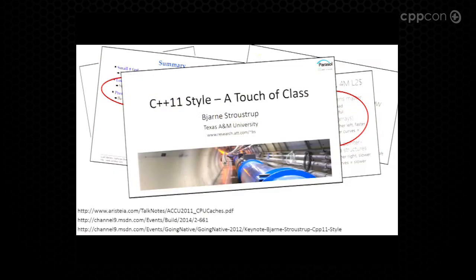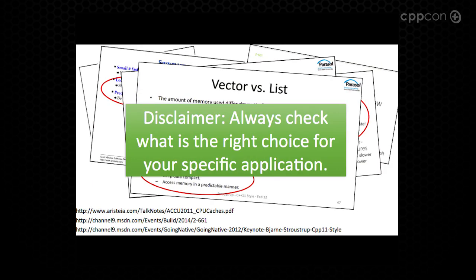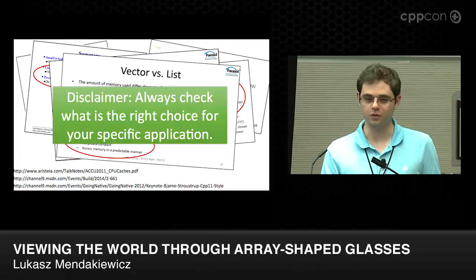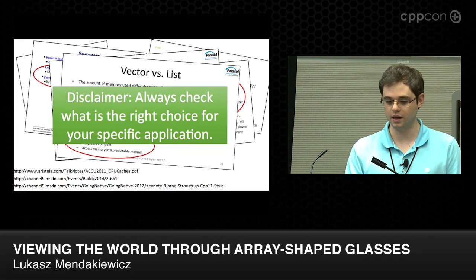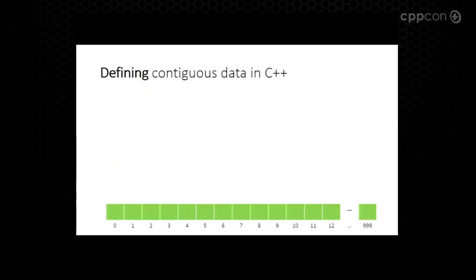And finally, Bjarne in C++11 style had his famous vector versus list benchmark, where he showed that an array or a vector is often faster than a list. Of course, don't take any of these statements at face value — always verify with your data. But assuming this will be true for your program, you would want to define contiguous data. How would you do it in C++?